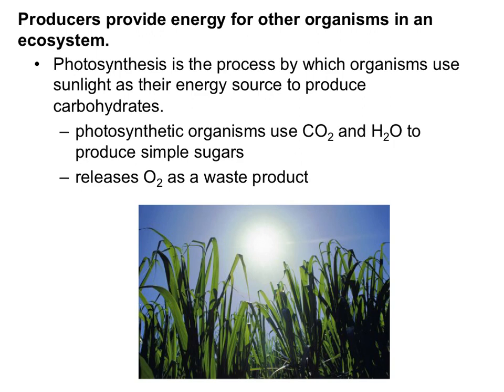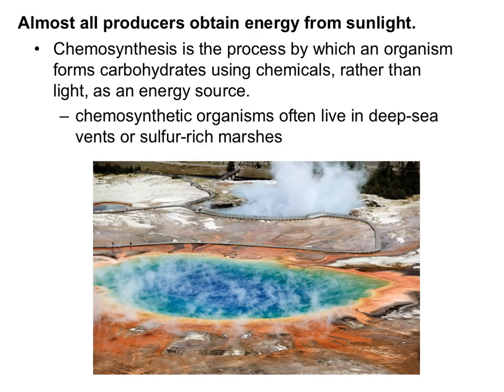To review, photosynthesis is the process by which organisms use sunlight as their energy source to produce carbohydrates. Photosynthetic organisms — like plants, bacteria, and some protists — use carbon dioxide and water to produce simple sugars and release oxygen gas as a waste product. Chemosynthesis is similar to photosynthesis; it is the process by which an organism forms carbohydrates using chemicals rather than light as an energy source. Chemosynthetic organisms often live in deep sea vents and sulfur-rich marshes.